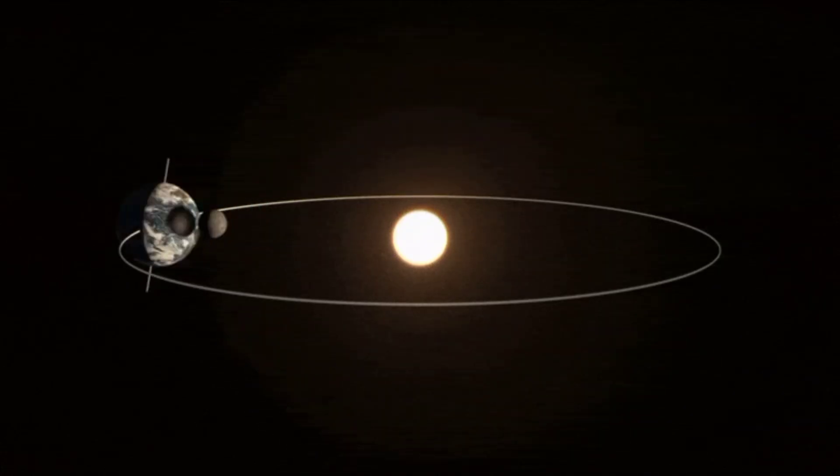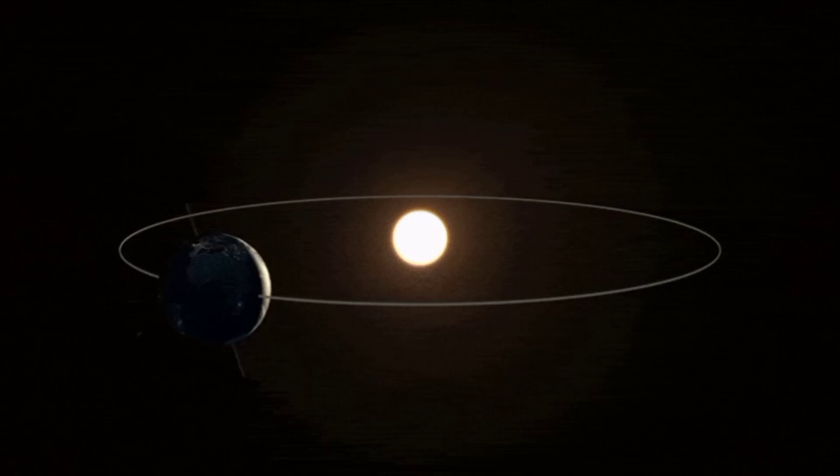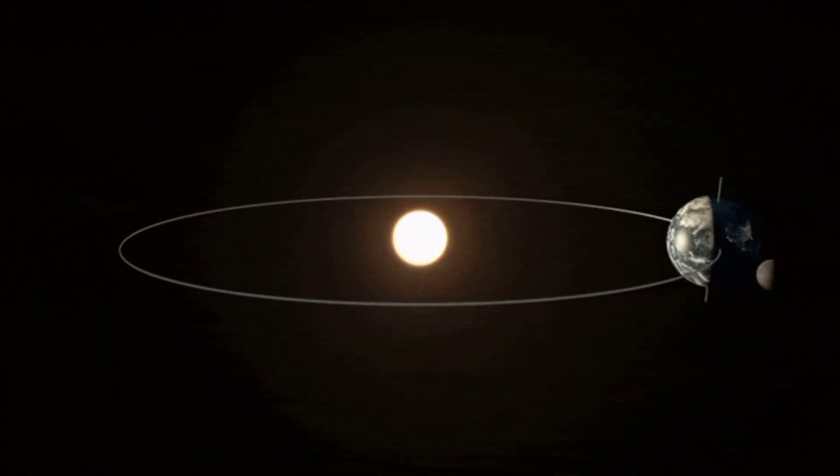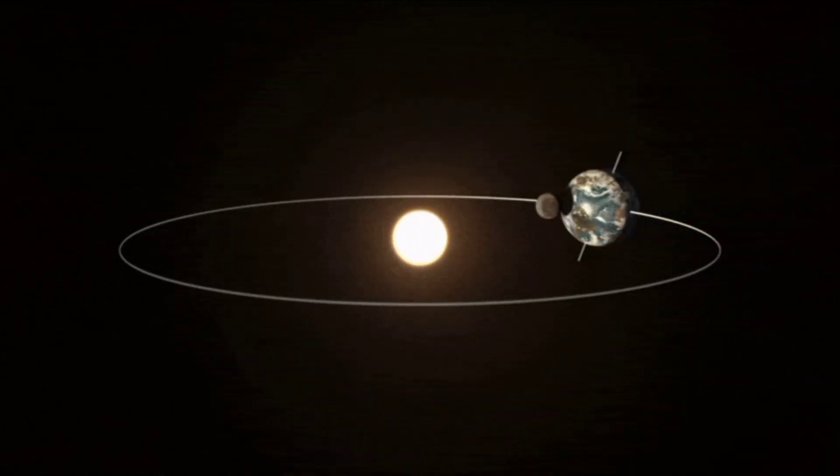The Moon's orbit around the Earth is slightly tilted compared to the Earth's orbit around the Sun. So most of the time, the Moon moves above or below the path of the Sun in the sky.